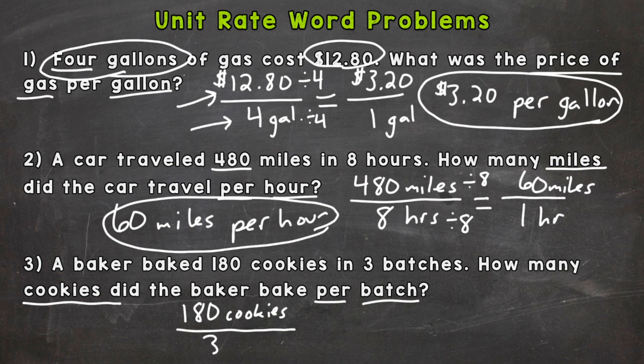And we want per batch. And there were three total batches. So there is our fractional ratio. Now we need to get it to a unit rate. So we need a denominator of one. So how do we get that? Well, let's divide three by three in order to get that one. So per one batch here.